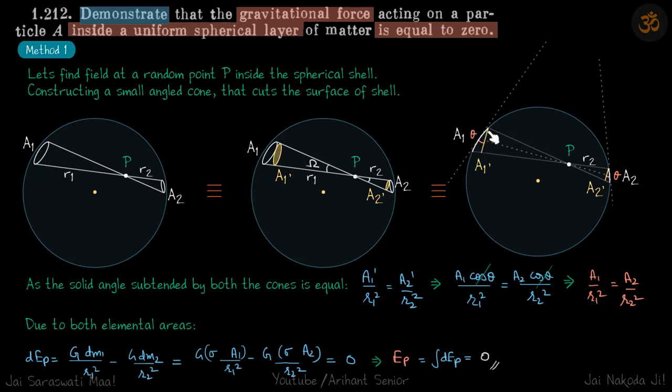dm1 for this we can write as sigma into area 1, so we'll write dm1 as sigma A1 and dm2 as sigma A2. Now we can see that G sigma is common in both terms, and we have A1 by r1 square here and A2 by r2 square here, which are equal.